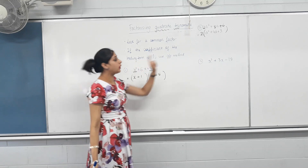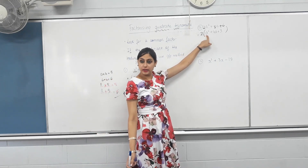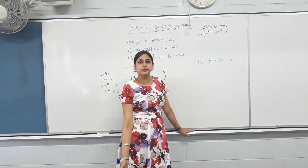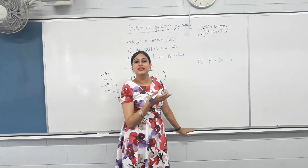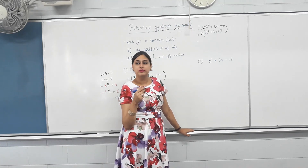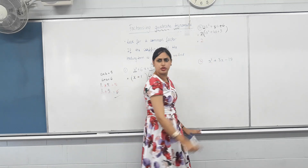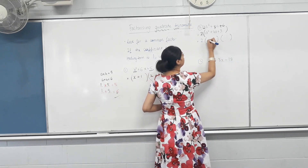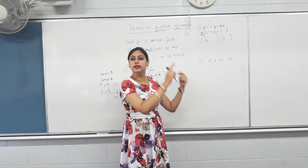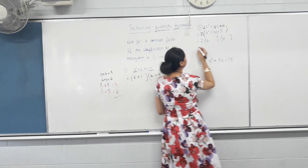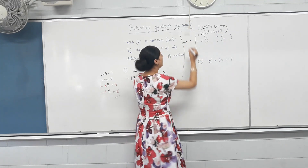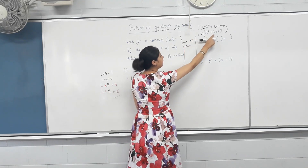Now, if the coefficient of the leading term is one — is the coefficient of A-squared one? Yes. Can we use the AB method? Yes. But what do I do with the two? I leave it there. So we now know that our answer will look something like two times bracket A plus something, times bracket A plus something. The numbers we're going to find using the AB method. Numbers multiply together to give you your last term, and same numbers added to give you your middle term.